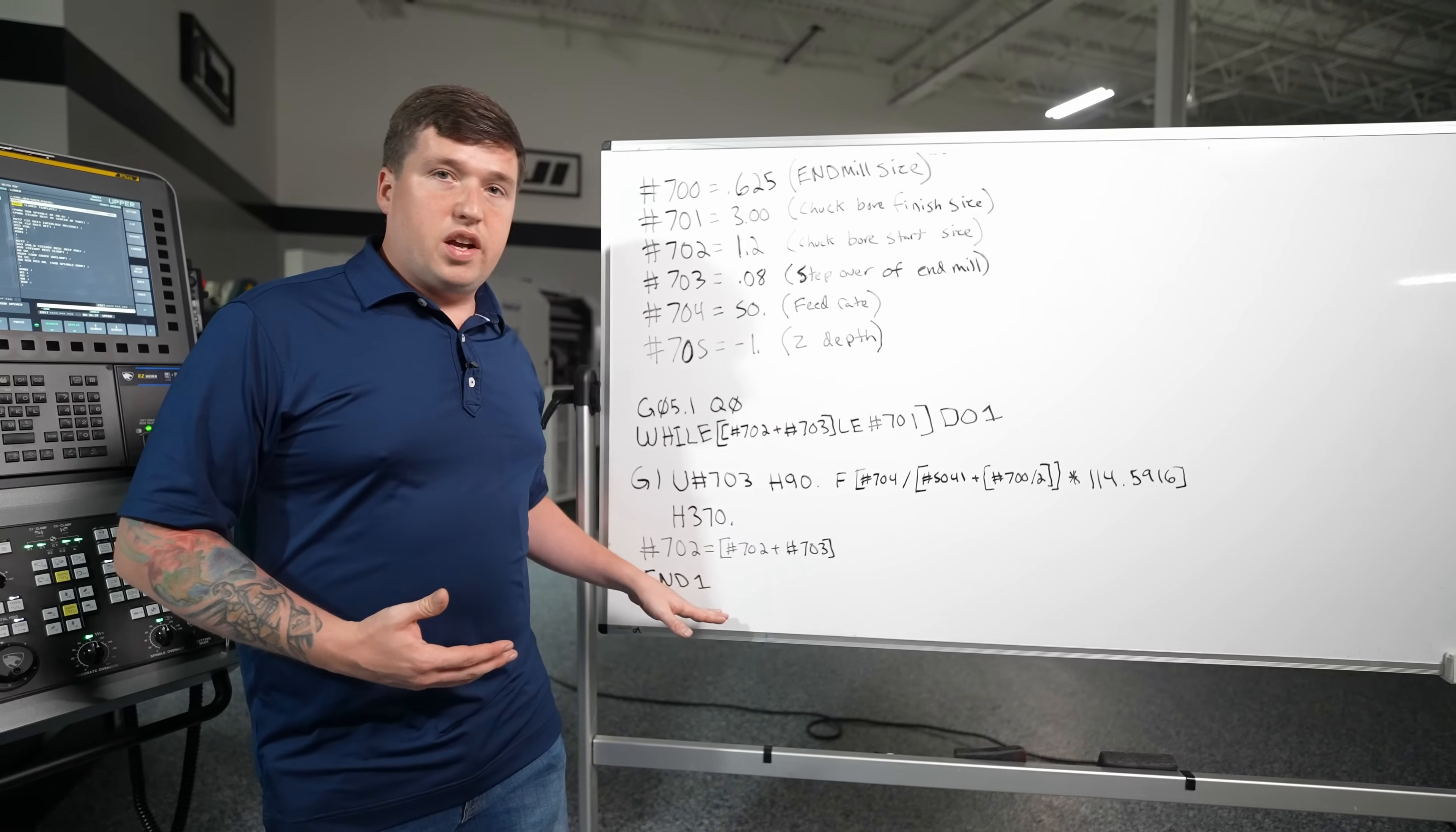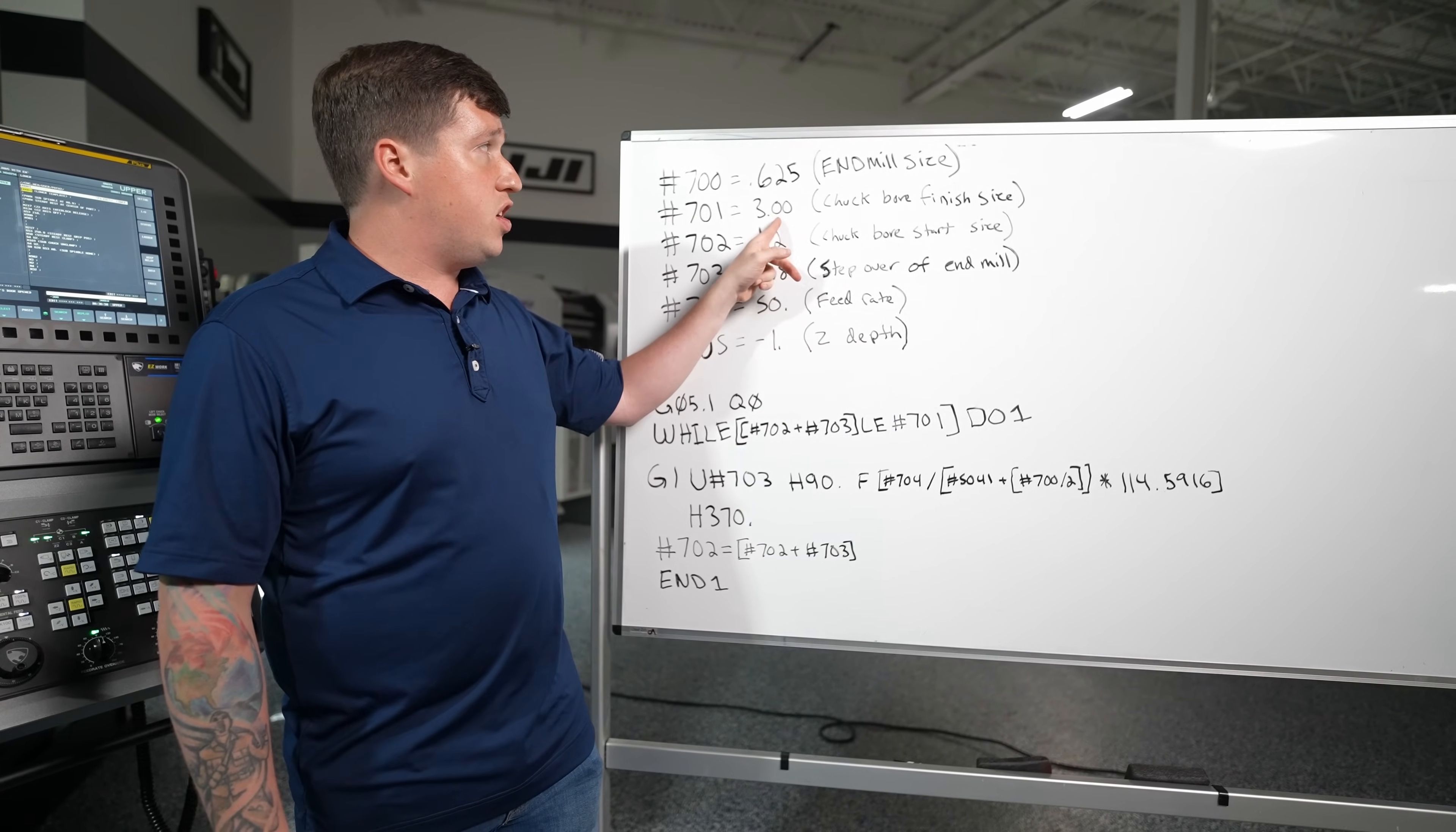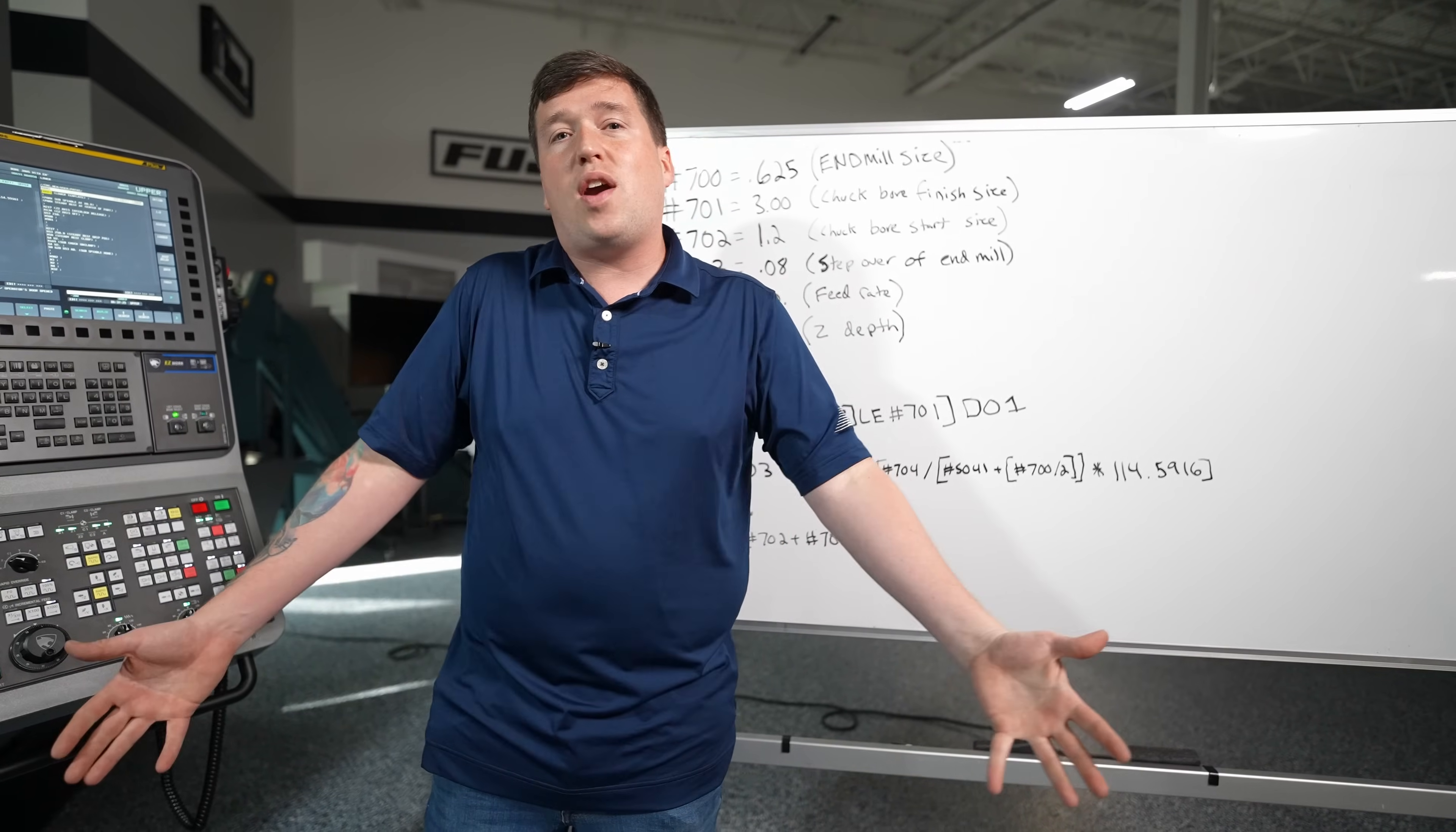So after the macro is over you're going to notice it goes to x of pound 701 minus pound 700. Now you'll notice instead of having a u on my move I have an x. That's because what I want to do here is my finish pass. So it's going to take absolute numbers from the macro variables we assigned earlier. So it's going to take my chuck boar finish size minus my end mill pretty much a similar line to this but just an x h of 90 and then it's going to do another circle. So with the way this is written it is going to do this size. So if you need to leave stock for a finished pass make sure you change this to something that will leave stock for your finished pass. In my case I didn't care I just wanted to take test cuts on my machine so I went to three inches I threw my stock in there and I had a great time doing it.